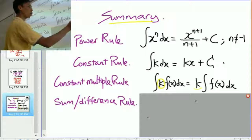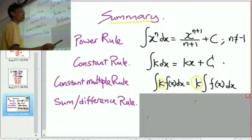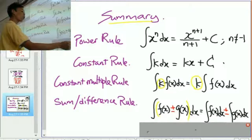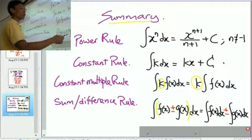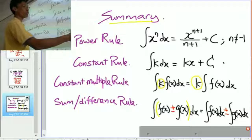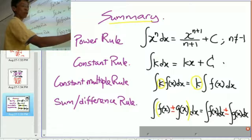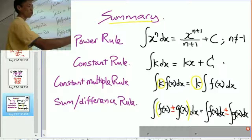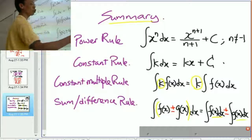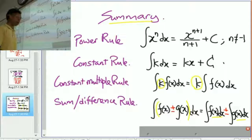See, the multiple comes out of the integration sign. And here's the rule for sum and difference. That is, basically, if you have a sum or difference, you can treat this as taking the integration part by part. The part with f of x and the part with g of x separately. Thank you.